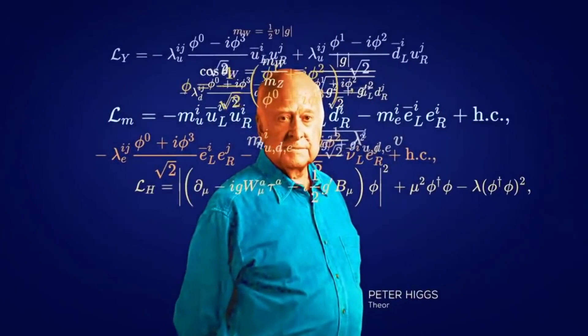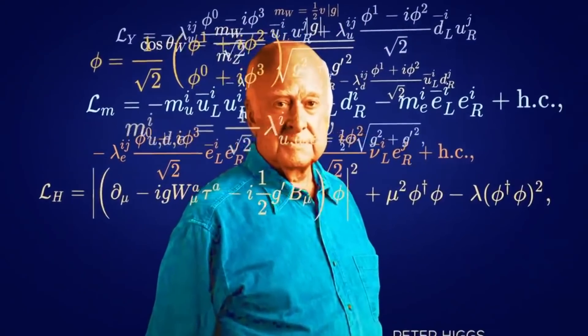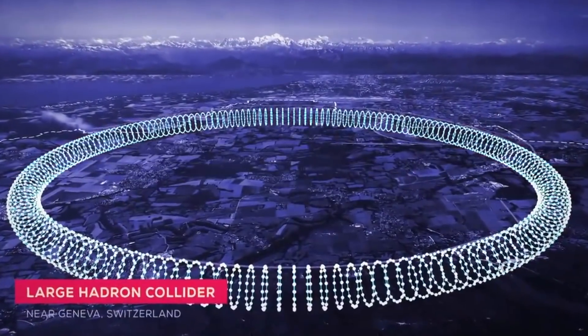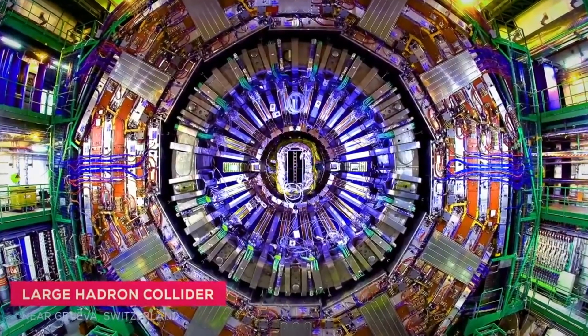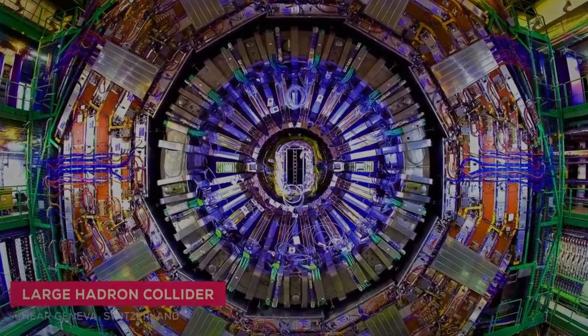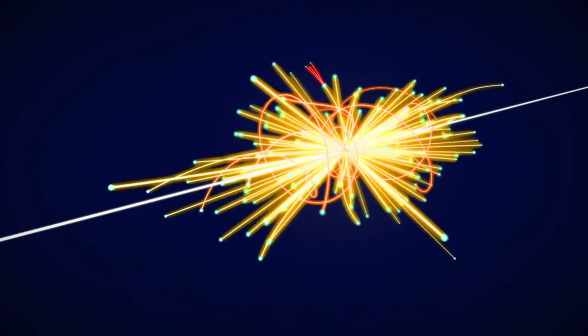Then, Peter Higgs used mathematical equations to predict the existence of an elementary particle. It took 48 years, billions of dollars, and millions of man-hours for experimental scientists to finally detect the Higgs boson.